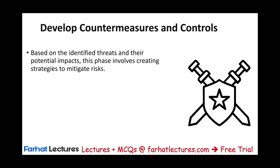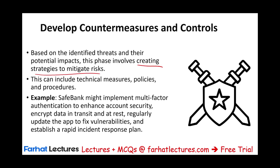After analyzing the impact, develop countermeasures and controls based on the magnitude of that impact. This phase involves creating strategies to mitigate the risk — technical measures, policies and procedures, installing firewalls and antivirus software, implementing multi-factor authentication to enhance account security, encrypting data in transit and at rest, updating any app vulnerabilities, and establishing a rapid incident response plan in case of an attack.